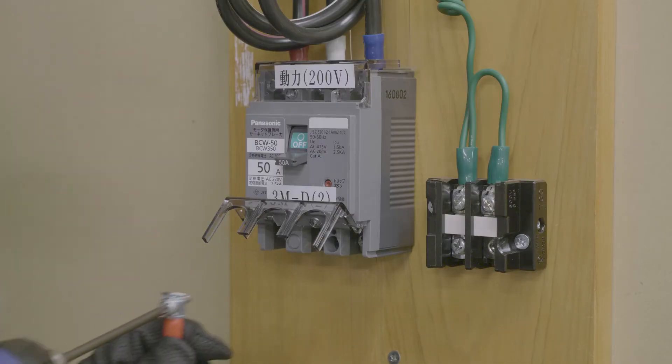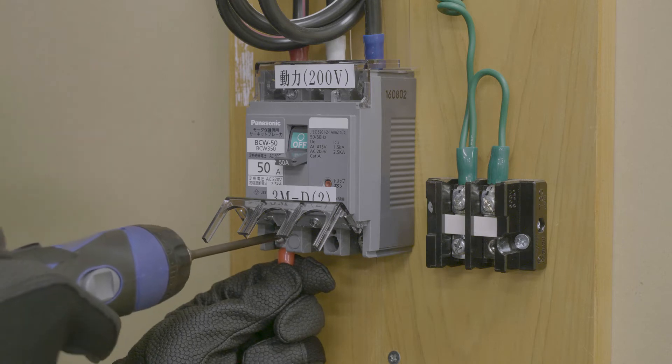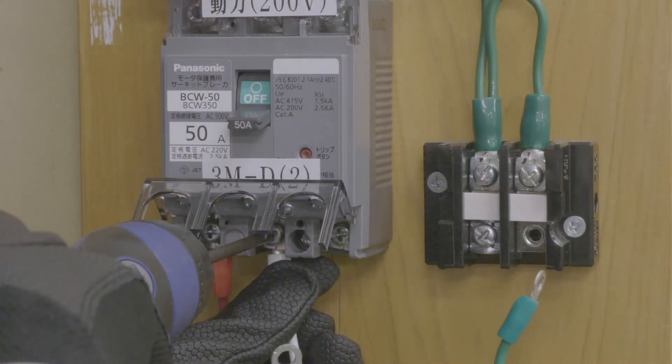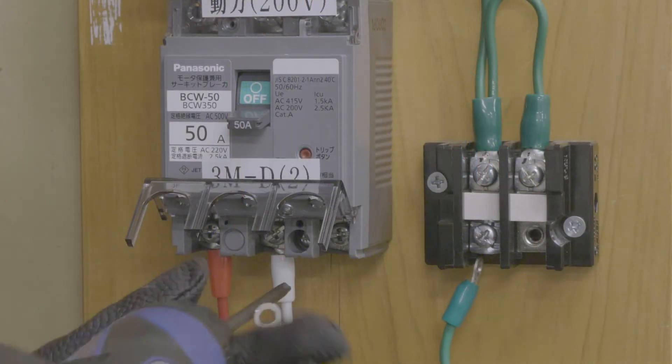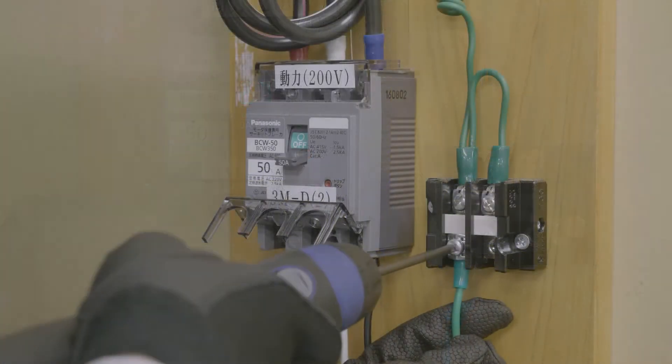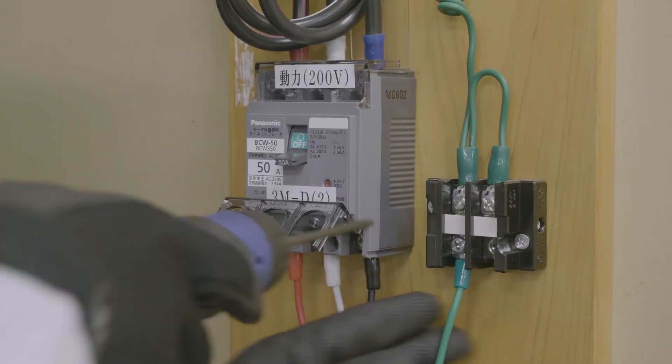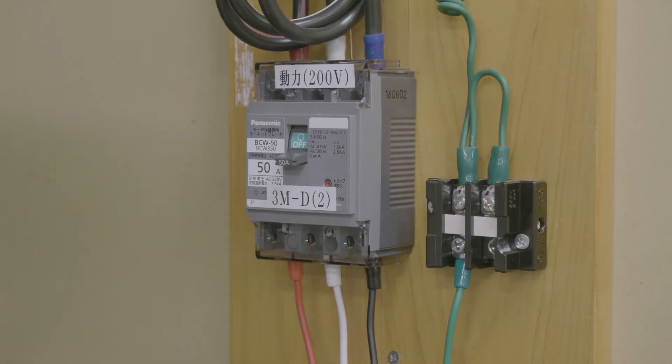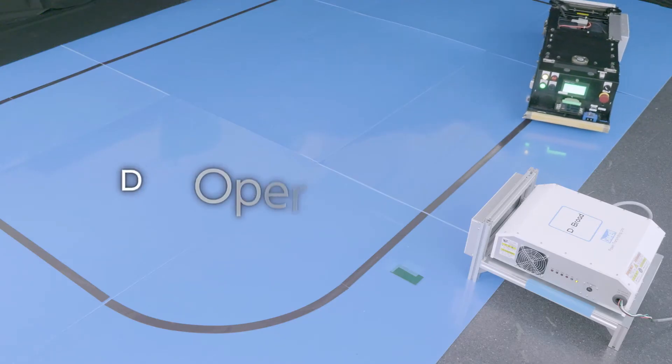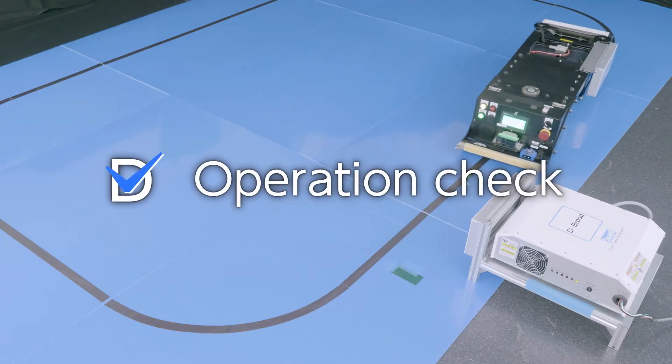Connect the input power cable to the primary power supply in the factory. Now you are ready for the next steps. Let's check the operation.